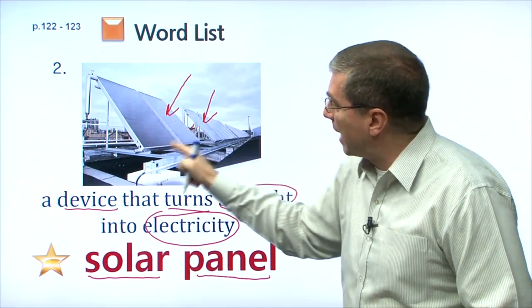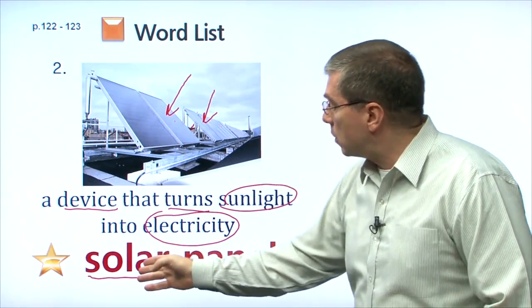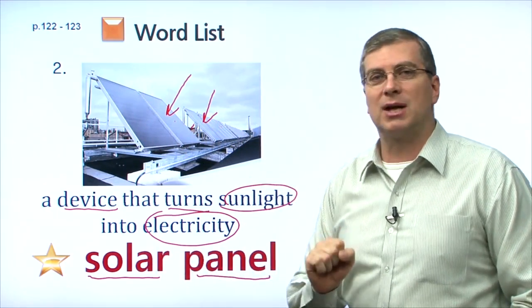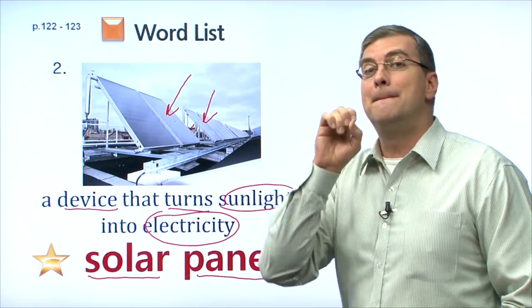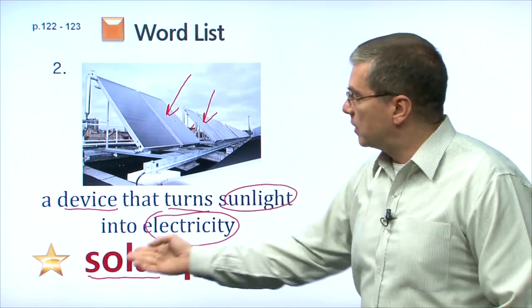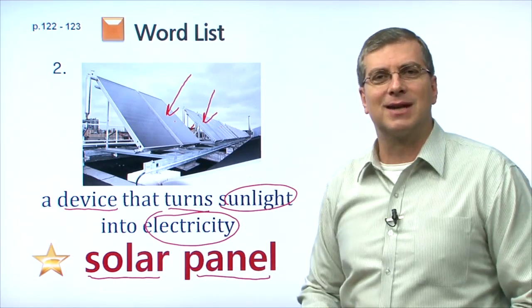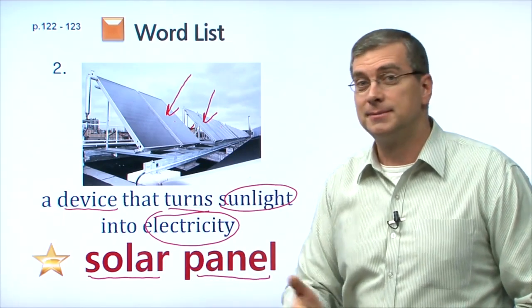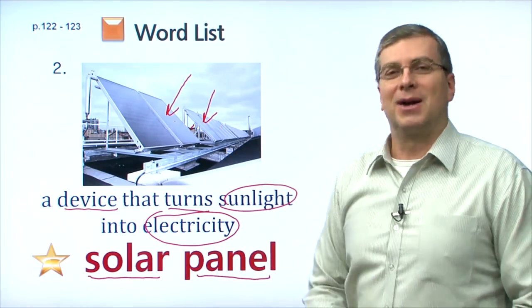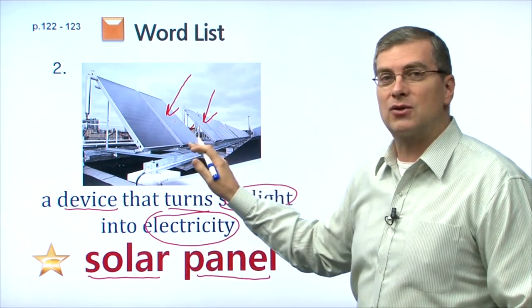Remember the P pronunciation. Panel. Lips together. So we have solar panel. Practice: solar panel. This is one device to make electricity. Let's move on to our third word.